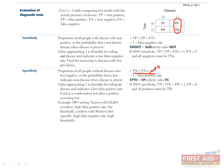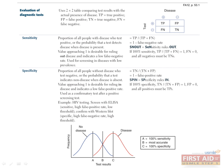For example, a positive test result for HIV with ELISA should be confirmed with a highly specific test, such as a Western blot.